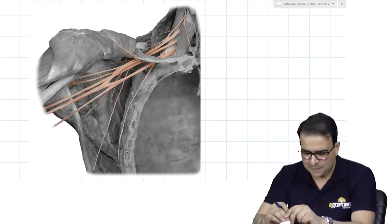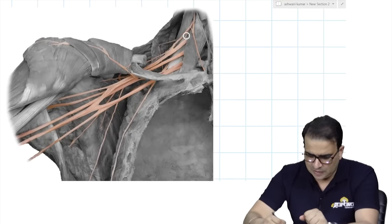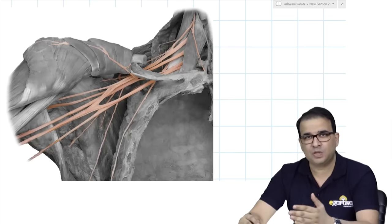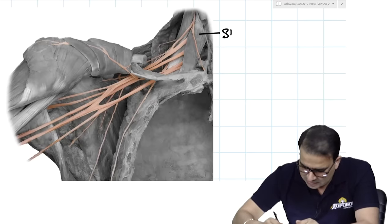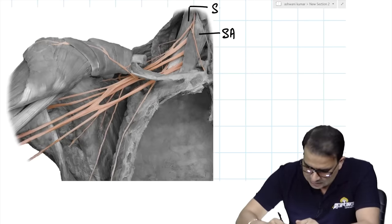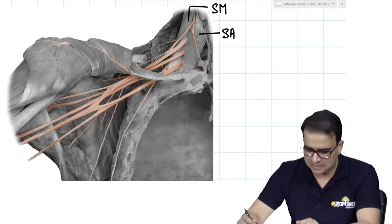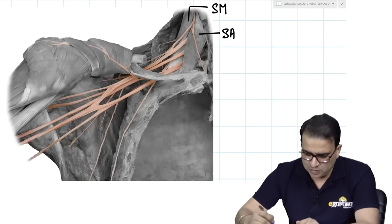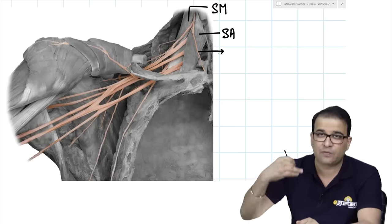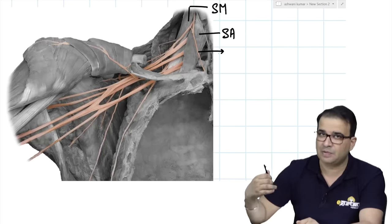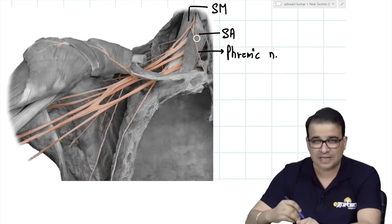The brachial plexus emerges between two muscles: scalenus anterior and scalenus medius. You can see scalenus anterior and scalenus medius, and the roots of the brachial plexus emerging between them. Even before going to the brachial plexus, you can see a nerve running in front of scalenus anterior — that's the phrenic nerve, which runs in front of scalenus anterior but behind the prevertebral fascia.